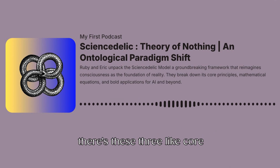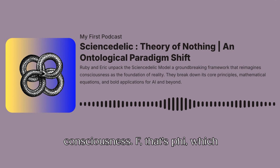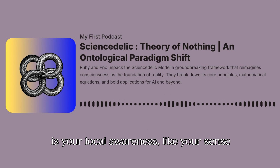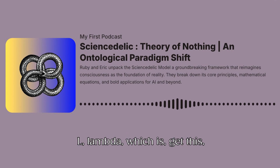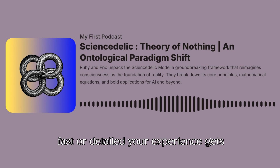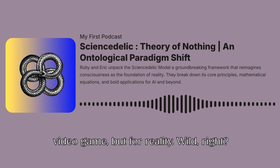Yeah, and there's these three core ingredients. Pex (Ψ), which is universal consciousness. F (φ), that's phi, which is your local awareness — like your sense of self or identity. And then L, lambda, which is the rendering speed. It's basically how fast or detailed your experience gets rendered. It's like the frame rate in a video game, but for reality. Wild, right?